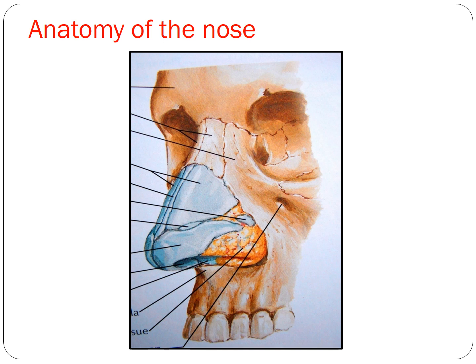Before we go into nasal fractures, we need to understand the anatomy of the nose. The nose is not entirely bony — it is made of both bone and cartilage. You have a pair of nasal bones, along with the frontal process of the maxilla and the nasal process of the frontal bone, forming the bony component. Below that is the cartilaginous part: the lower lateral cartilages (major, minor, and accessory), a pair of lateral nasal cartilages, and the septal cartilage.